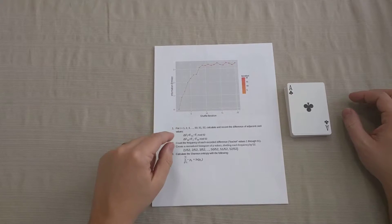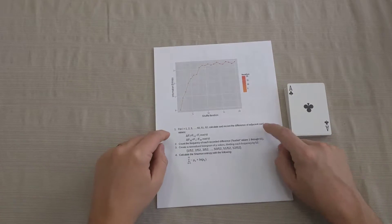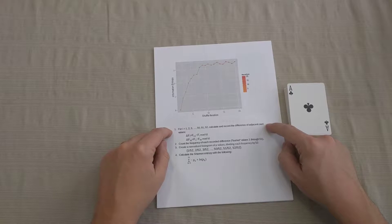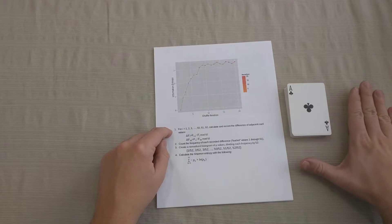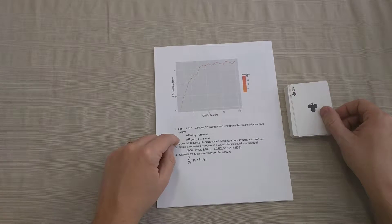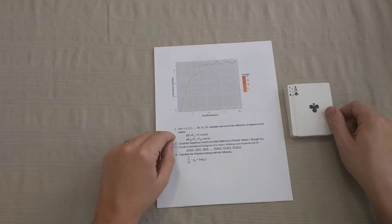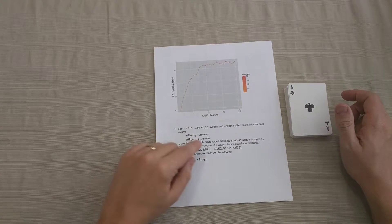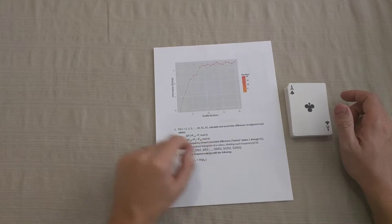So in order to quantify this, we can do that by taking the difference of adjacent face values. So for every position in the 52 positions in the deck, I would take the first position and take its difference with the next position in the deck. And I would do this modular 52.